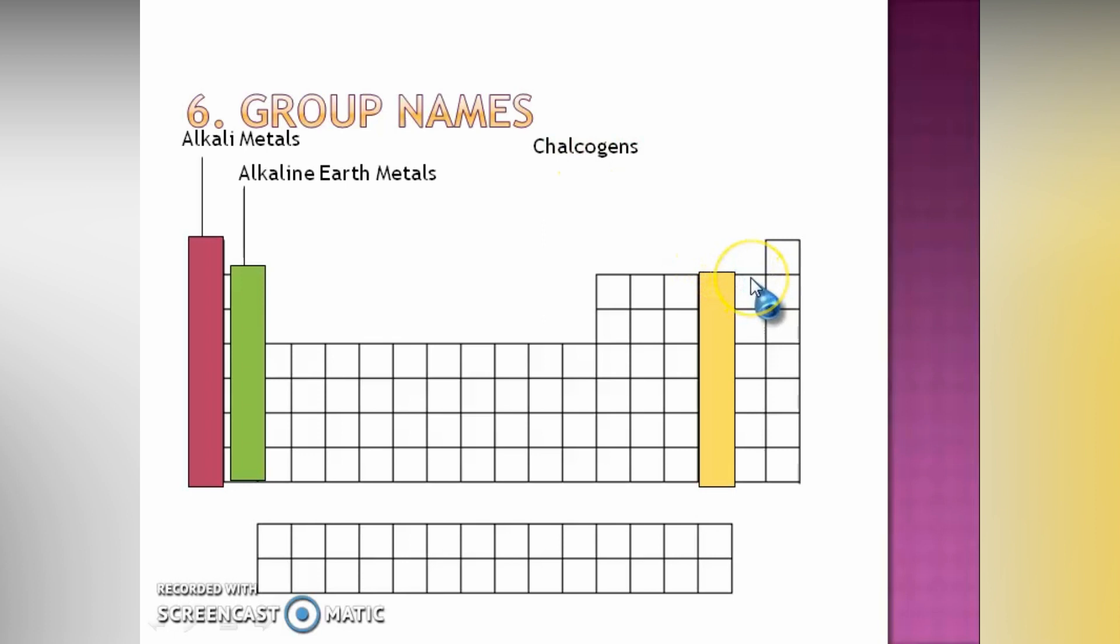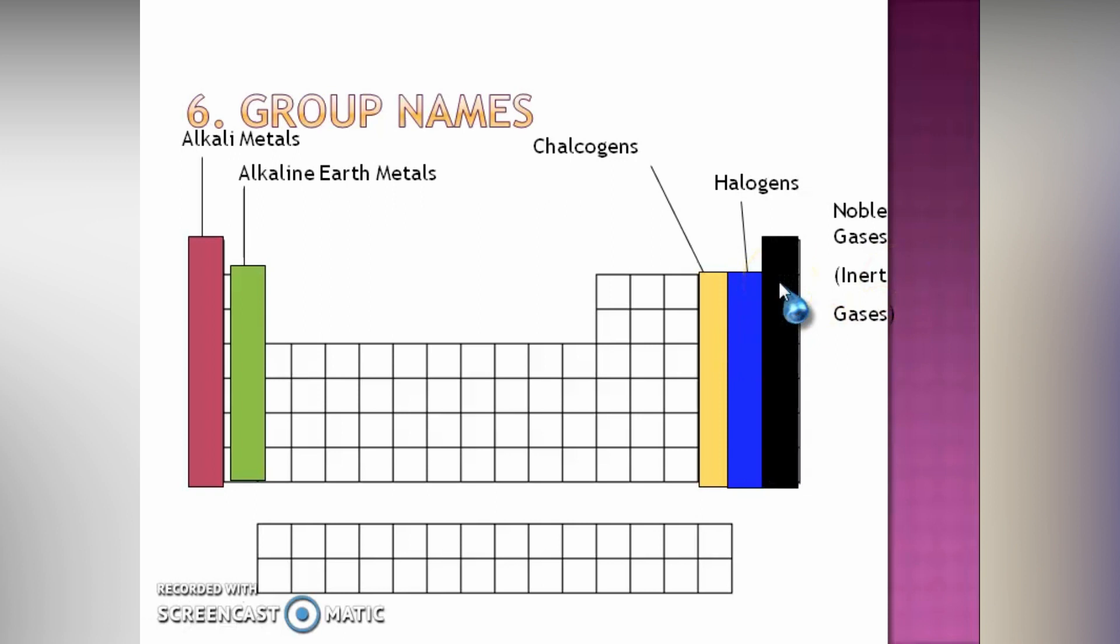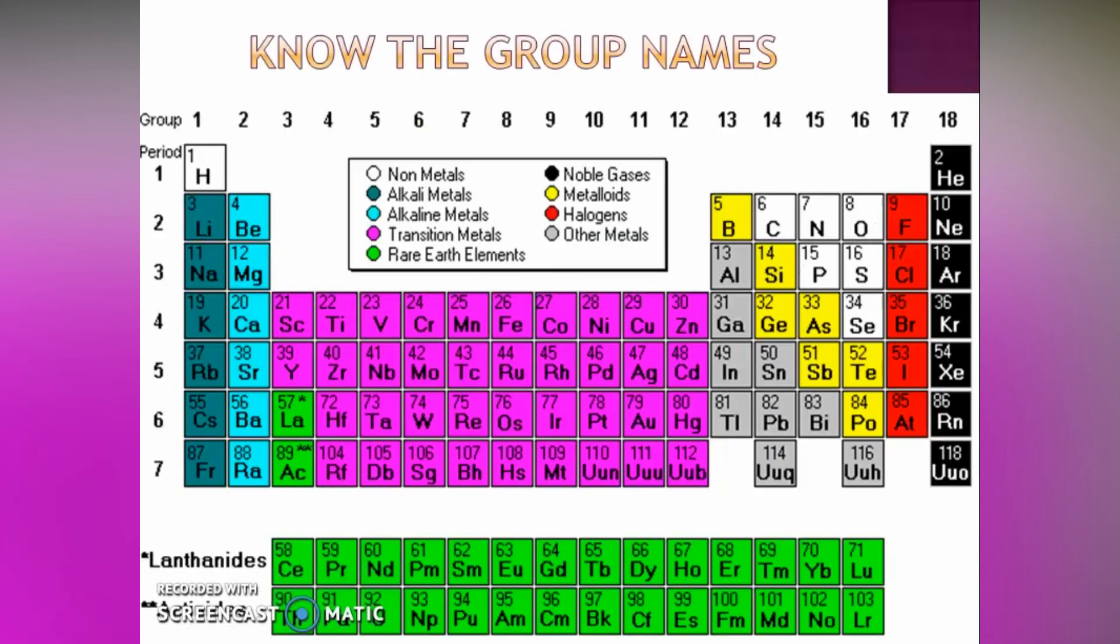Then, we have the group 7 elements which are the halogens. Then, lastly, we have the group 8 elements which are the noble gases. They are still called the inert gases or the rare gases. So, these are the names on the periodic table.